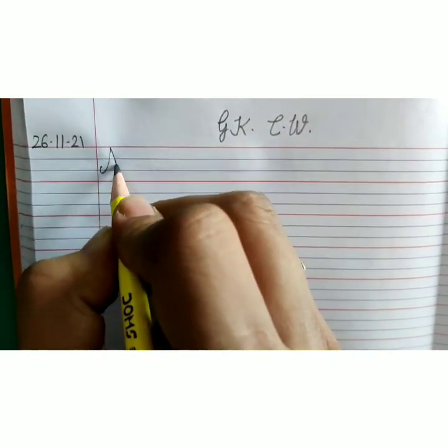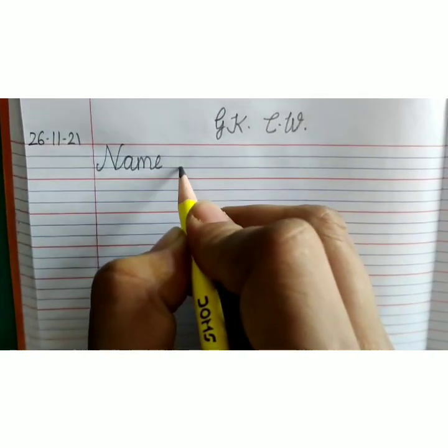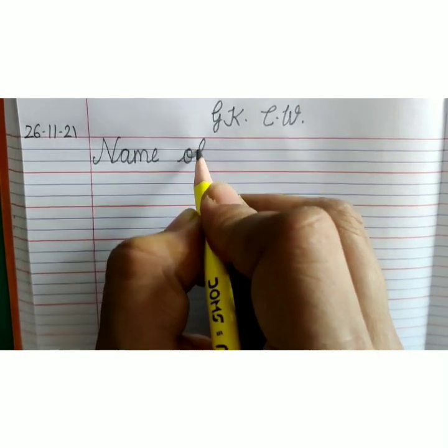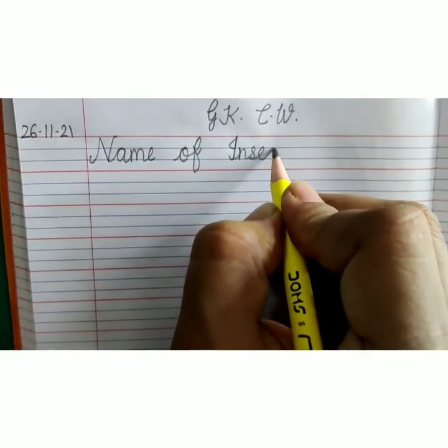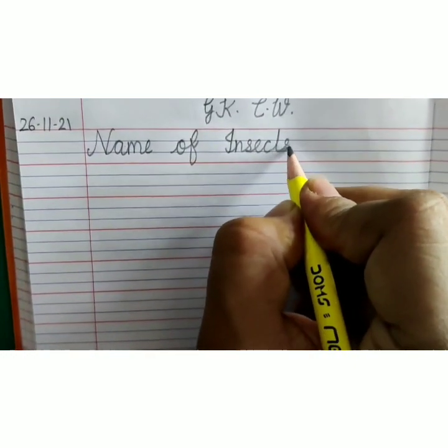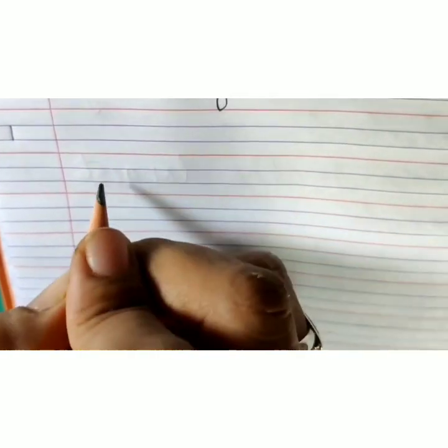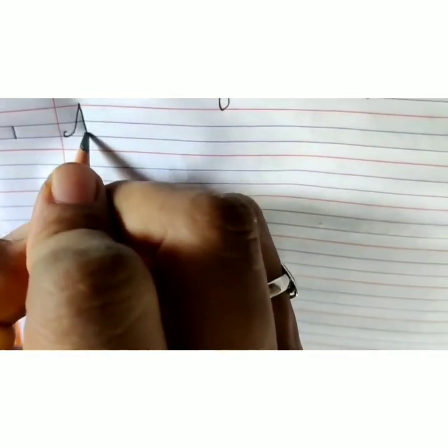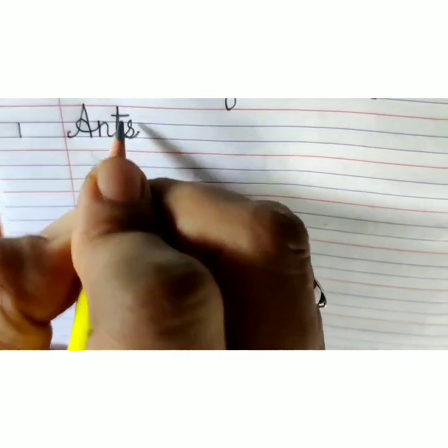Near the margin write down heading capital N-A-M-E, name, O-F of I-N-S-E-C-T-S, insects, name of insects. In margin write number 1. Your first letter should be capital, capital A-N-T-S, ants.